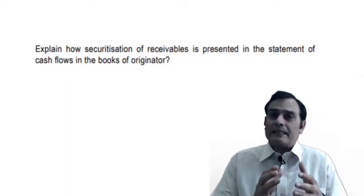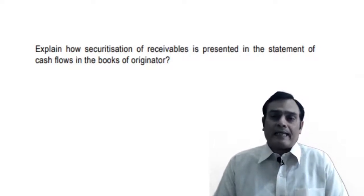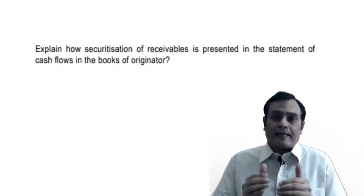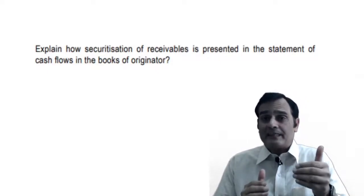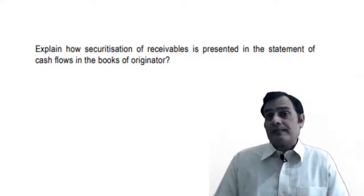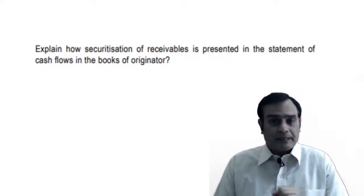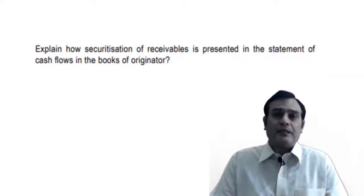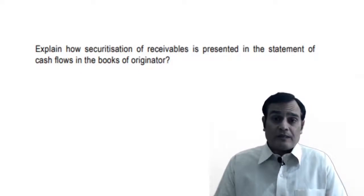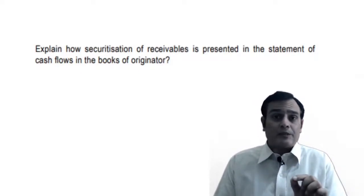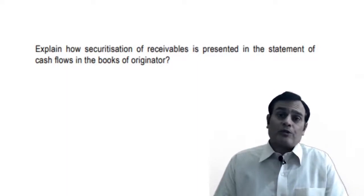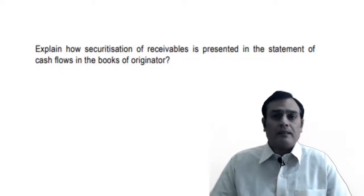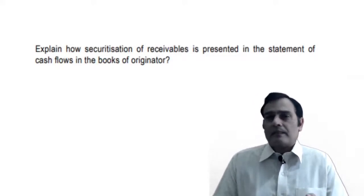There are two situations when looking at securitization of receivables. Either it is eligible for derecognition as per Ind AS 109, or it is not eligible for derecognition. If it is eligible for derecognition, it is treated as a sale of receivable, and in that case it is treated as an operating activity. The education material also clarifies that even if the company is not regularly entering into these kinds of transactions, it would still be considered an operating activity, because it is essentially an early collection of receivables.